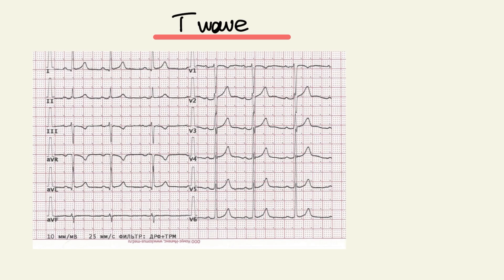T wave represents ventricular repolarization. And T wave can be positive at all leads except AVR. And sometimes we can see biphasic or negative T waves at lead 3, AVL, and V1. It's a variant of norm.